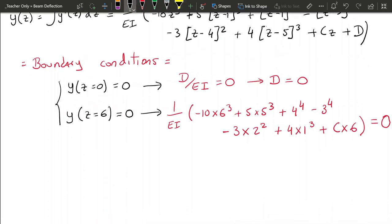So if we take the calculator, we're going to get that 6C. Okay, there was a mistake here. This 4 should have been a 5. So it's 5 to the power of 4, not 4 to the power of 4.